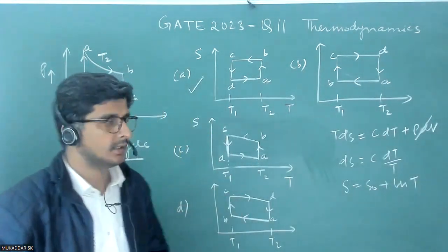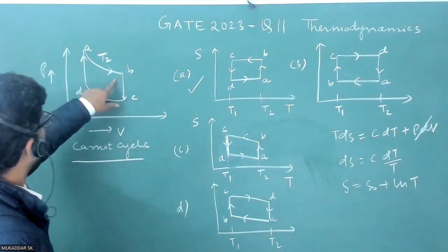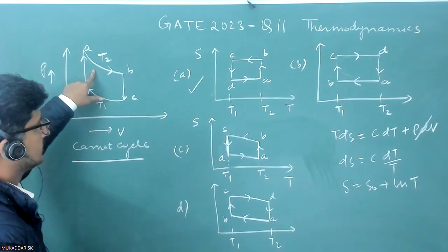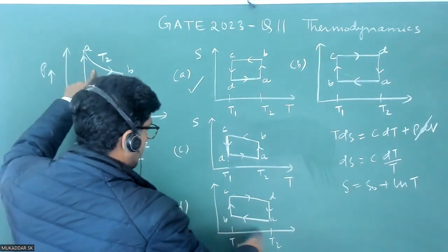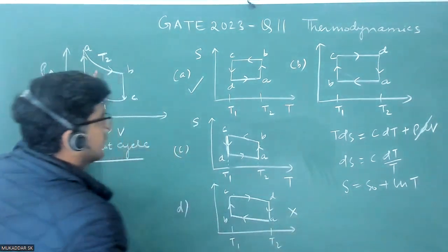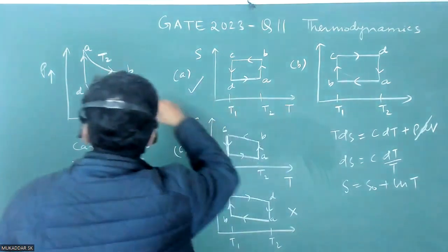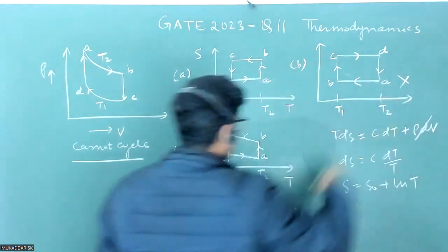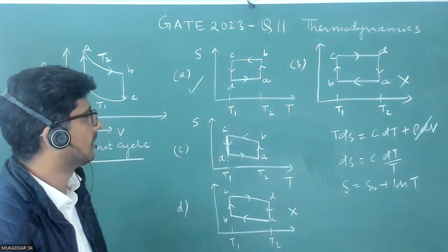And two options are incorrect because B and A should have constant temperature. So here B and A you have change in temperature and here A to B is again change in temperature so they are incorrect. And this is not showing the log nature.